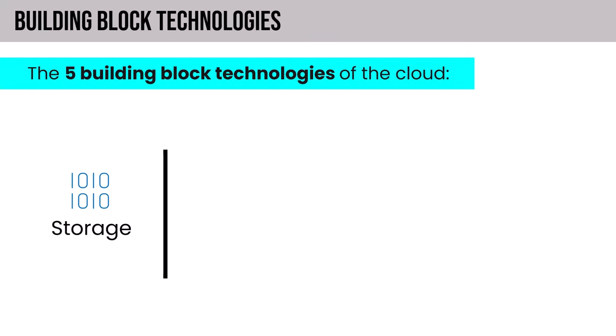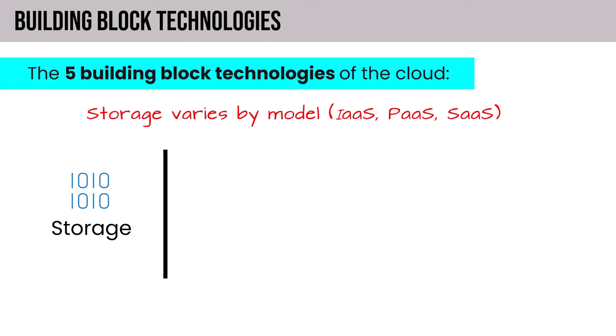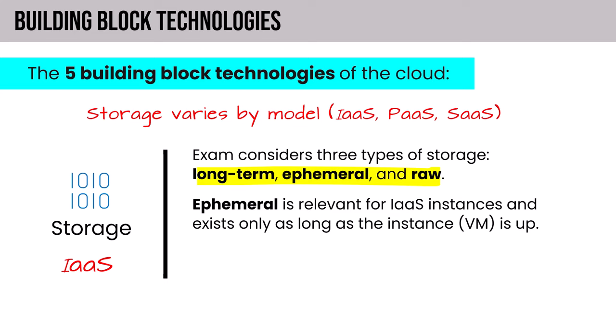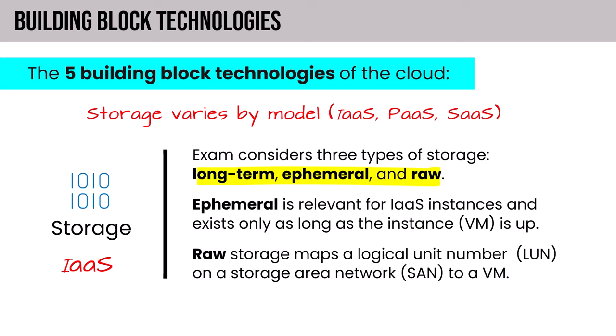Storage varies by model — whether IaaS, PaaS, or SaaS. The CCSP exam considers three types of storage: long-term, ephemeral, and raw. Ephemeral storage is relevant for IaaS instances and exists only as long as the instance is up — that would be a temp disk generally. Raw storage maps to a LUN on a storage area network attached to a VM, a concept more common in hybrid scenarios. Long-term storage offered by some CSPs is tailored to data archiving needs and typically uses volume or object storage infrastructure.